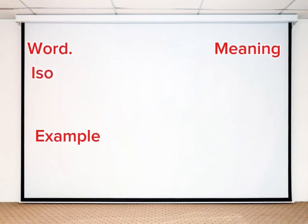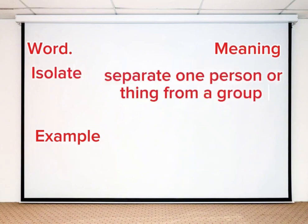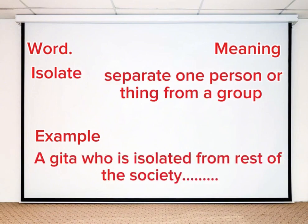Number two, isolate. Separate one person or thing from a group. For example, a ghetto is isolated from the rest of the society.